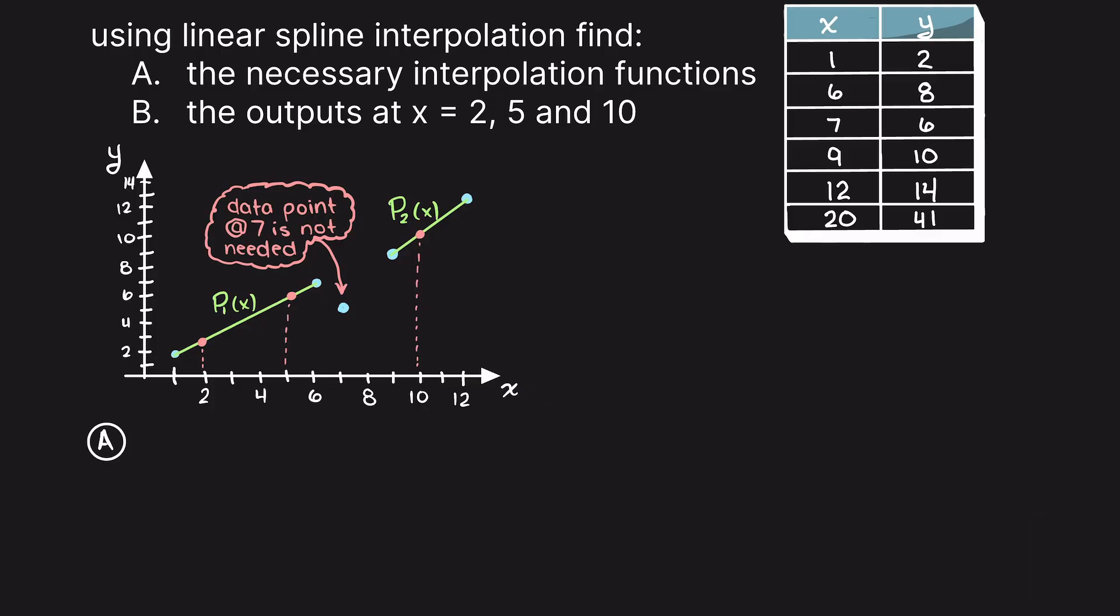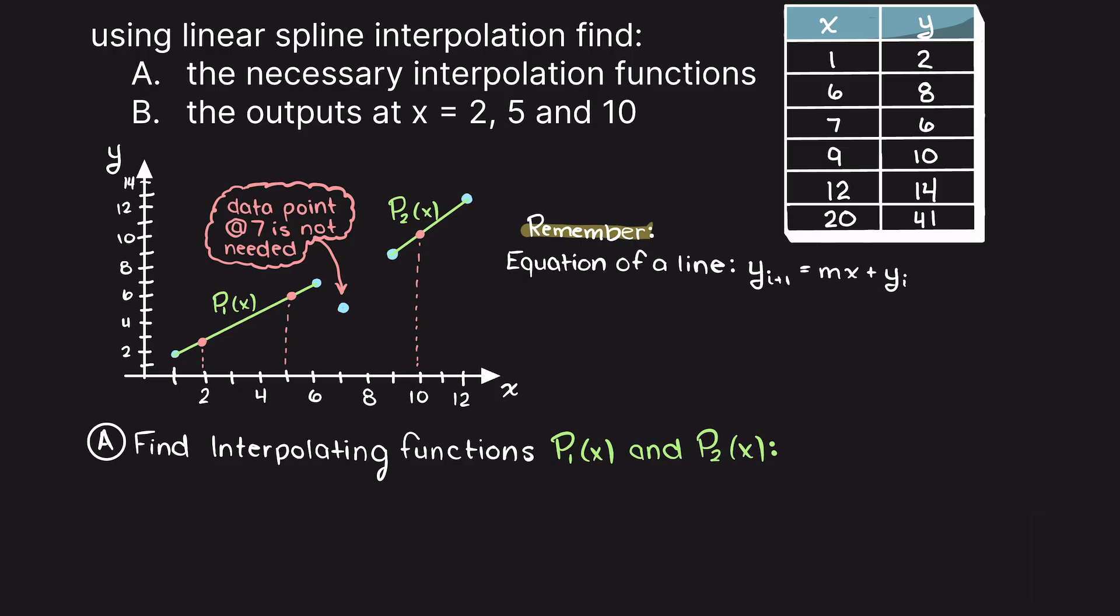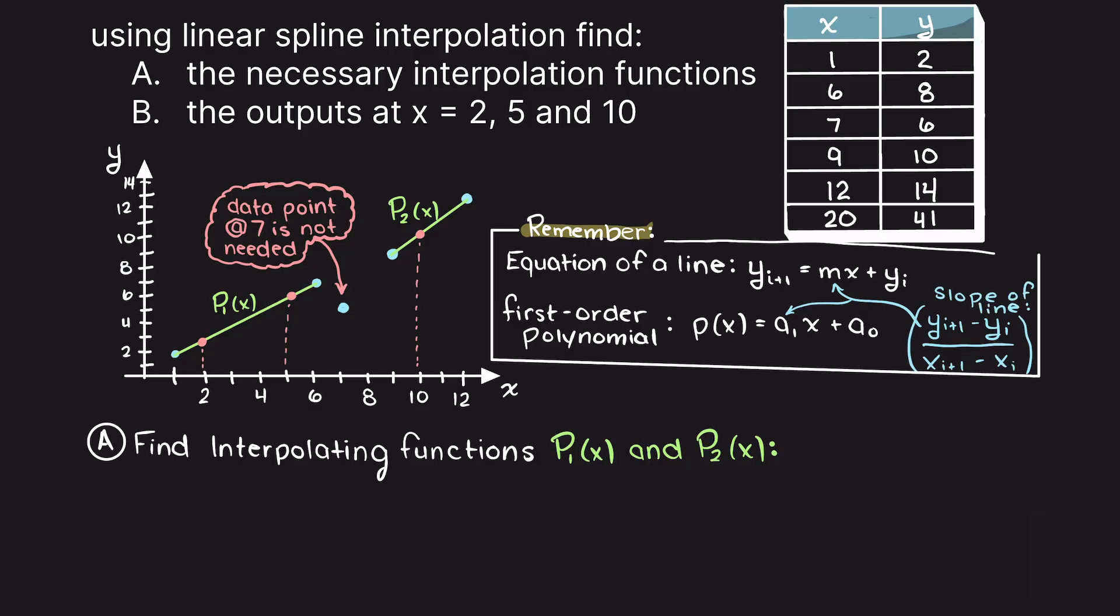Now, we can begin solving for our first and second interpolating polynomials for this question. Just briefly, since we are going to be finding straight lines or first order polynomials as p1 and p2, let's just write out the equation for a straight line and a general first order polynomial and you can see that they are actually the same thing. We are now ready to begin solving for our two polynomials.